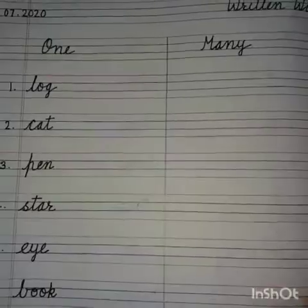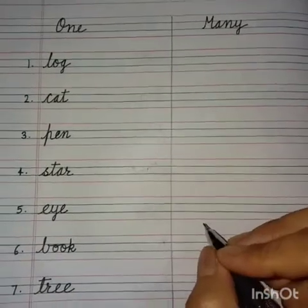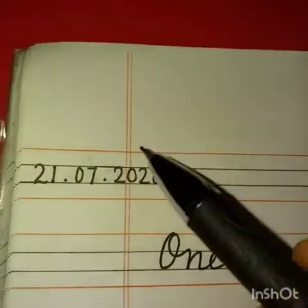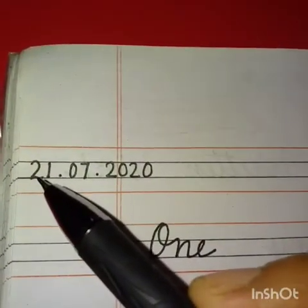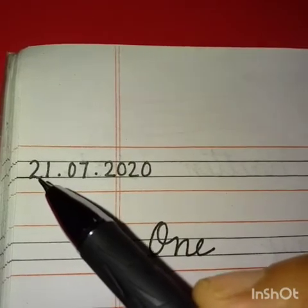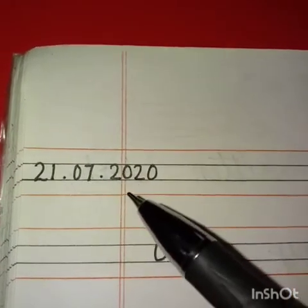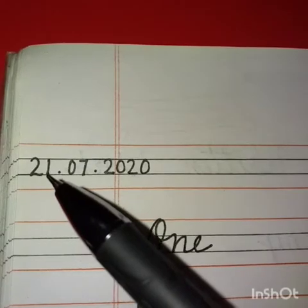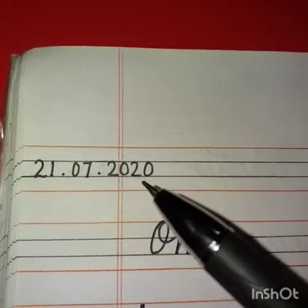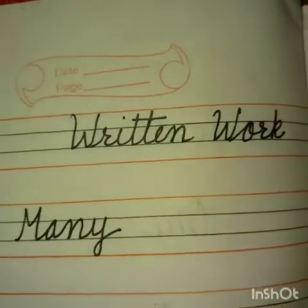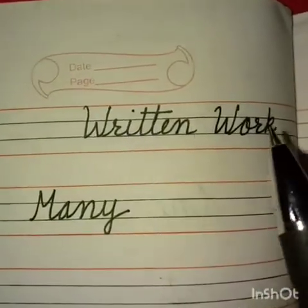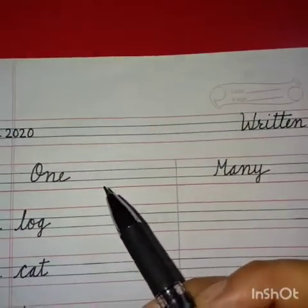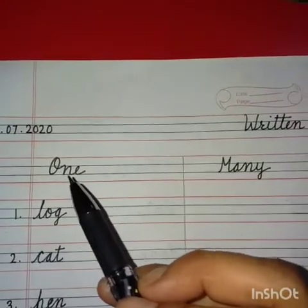So let's start today's class. Take out your English notebook. Sharpen your pencil and get ready for the written work. We will write it here on the left side. Today is 21st of July 2020. We should write it this way: 21.07.2020. Right side, we will write 'written work.' Second row.